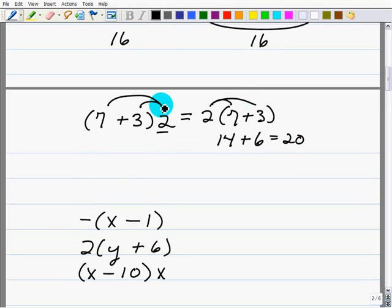So that would be 14 plus 6, or 20. Or if you did it this way, 2 times 3 is 6, plus 2 times 7 is 14, which of course is 20.